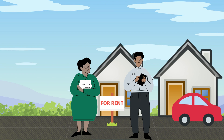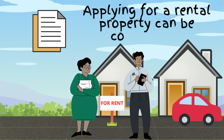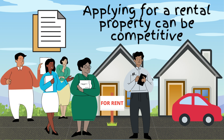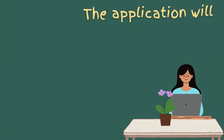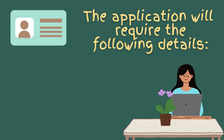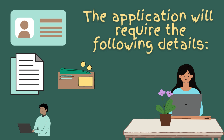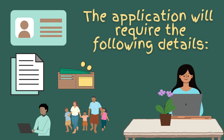After inspecting the property, if you want to apply for it, ask the landlord or real estate agent for the application forms or where to apply online. Applying for a rental property can be competitive, especially if many people are interested in one property. The application will usually require potential renters to provide the following details: identification, renting history, where have you lived previously, employment — the landlord will want to ensure tenants can pay the rent on time — and references. Property managers may contact references such as previous managing agents, employers or character references, who will be living at the property with you along with any pets.